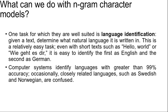The bigram model can be learned from a corpus. We may have some estimate of the prior probability P(L). For example, if we are selecting a random page from the web, we know that English is the most likely language and the probability of Macedonian will be less than 1%. The exact number we select for this prior is not critical because the bigram model usually selects one language that is several orders of magnitude more probable than any other.